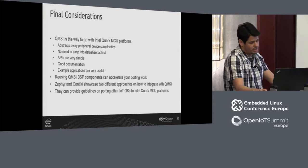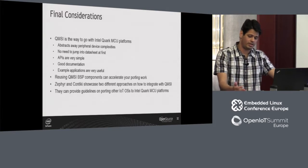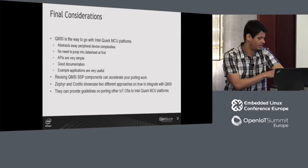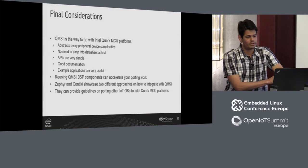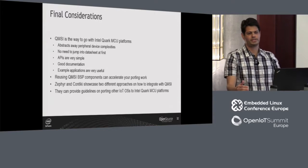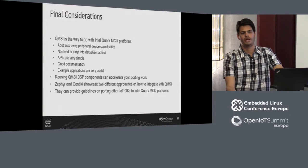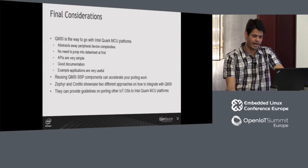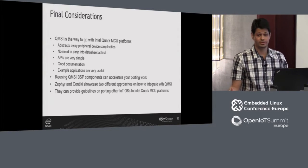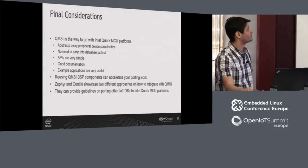Final words: when it comes to Intel Quark MCU platforms, QMSI is the way to go. QMSI abstracts away the peripheral devices, so you don't have to jump into the data sheet. When doing an initial port for other platforms I've worked on, the first thing you have to do is understand how the MCU works, what registers to read or write. Using QMSI, you don't have to do that — QMSI already provides an API. For an I2C transfer, you just call the I2C transfer API with the buffer and size, and QMSI does it for you without looking at I2C registers.